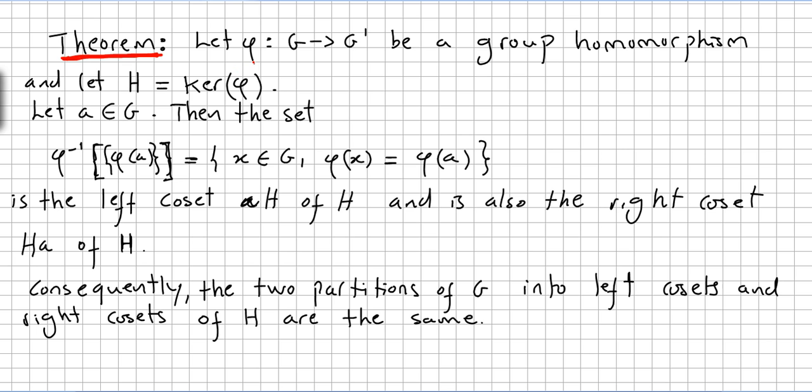Let Φ be a group homomorphism between G and G', and H be the kernel of Φ. So the kernel of Φ will be the subset of G, of all elements of X that the image is the identity of G'.